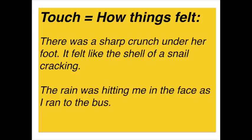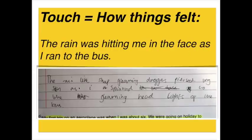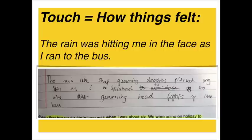Now, touch — how things felt. Examples: there was a sharp crunch under her foot; it felt like the shell of a snail cracking. The rain was hitting me in the face as I ran to the bus. The development: the rain like sharp gleaming daggers pierced my skin as I sprinted to the gleaming headlights of the bus. Much more urgency to get to the bus, and the rain itself is much more painful through this simile — 'like sharp gleaming daggers pierced' instead of 'hit.' A fantastic development of this line.